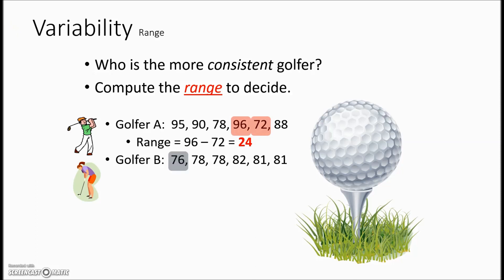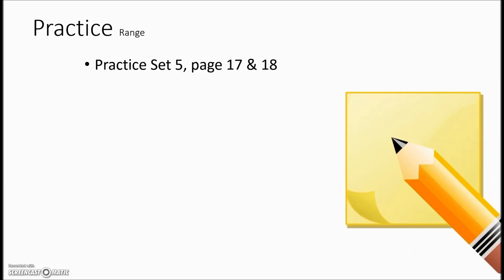For golfer B, we have a low of 76 and a high of 82. The range is the difference between those two values which is 6 and for the more consistent golfer then it would be the one with the smallest range. So golfer B would be our choice. For additional practice on finding range, look at practice 5.